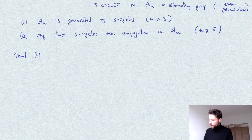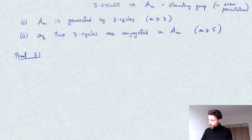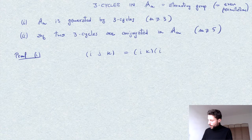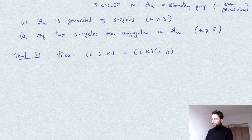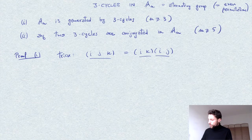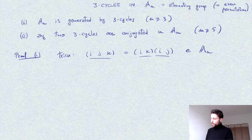For the first part, we observe that any three-cycle (ijk) can be written as the product of two transpositions: (ik)(ij). I'll let you verify this — it is immediate. In particular, any three-cycle is an even permutation because it is written as the product of two transpositions. Therefore every three-cycle is an element of An.